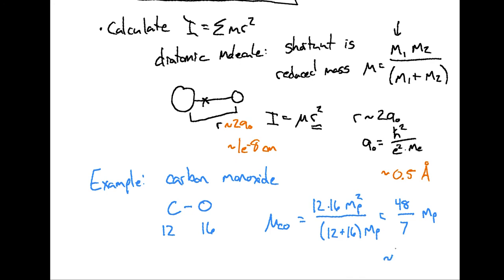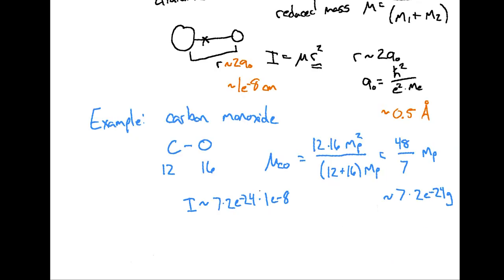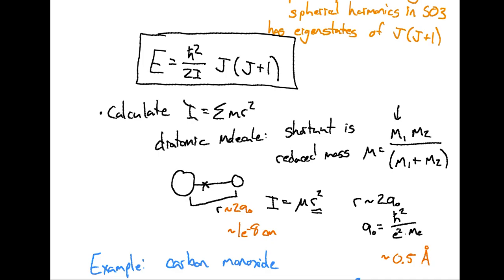The moment of inertia is roughly 7 × (2×10⁻²⁴ g) × (2 Bohr radii)², where 2 Bohr radii ≈ 1×10⁻⁸ cm. This comes out to approximately 1×10⁻³⁹ g·cm². We now have this moment of inertia I to plug into the energy equation for carbon monoxide's rotational states.